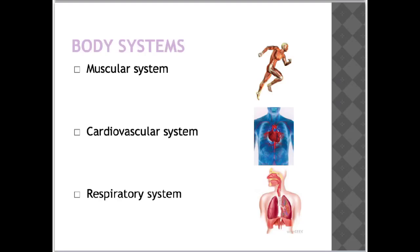When we consider acute and chronic physiological responses to exercise, we're going to be looking at the muscular system, the cardiovascular system, and the respiratory system. The muscular system consists of skeletal, smooth, and cardiac muscles. It permits movement of the body, maintains posture, and circulates blood throughout the body.